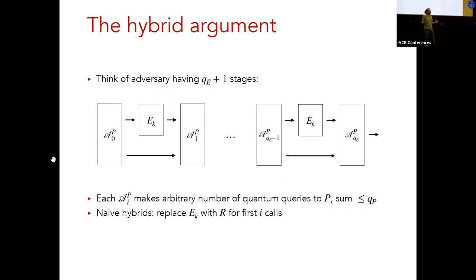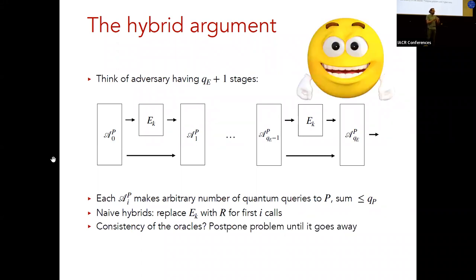So here, I want to note that each stage can make an arbitrary number of queries to the quantum oracle for P, except that the total number of queries is bounded by some number QP. So basically, the adversary can adaptively choose how to distribute the quantum queries between the different stages. Now, the naive idea would be, of course, to replace the instances of the cipher by the random permutation one by one. So we start by replacing the first call with the random permutation, then the second, et cetera. However, there's a subtle issue with consistency of the oracles that come up. And I want to explain that in the next slide. But first of all, let me already present the solution. And it's a bit naive sounding, but it works. It's basically to postpone the problem until it goes away. Sounds magical, but it works.